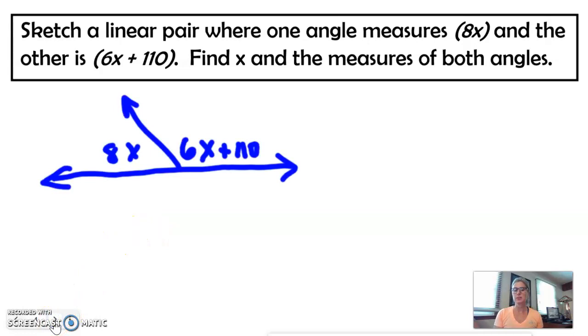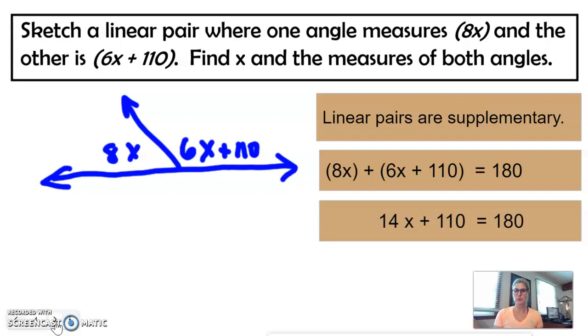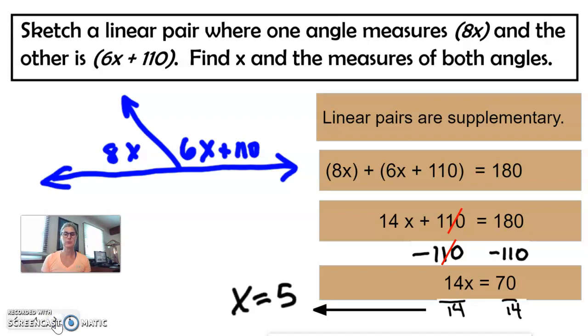So here's the picture of a linear pair. I put 8X and 6X plus 110. Because we know it's a linear pair, we know they're supplementary, so let's add the two angles together to equal 180. Set up your equation, combine like terms, we have 14X plus 110 equals 180, subtract 110 from both sides of your equation, and you are going to get 14X is 70, divide by 14, and we get the answer of X equals 5.